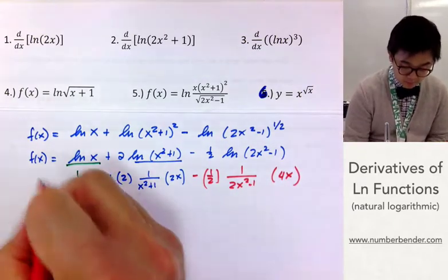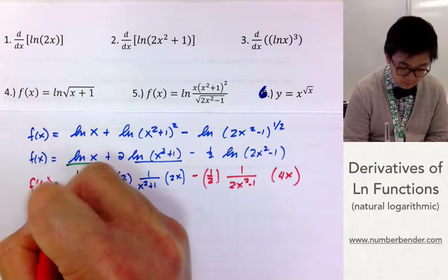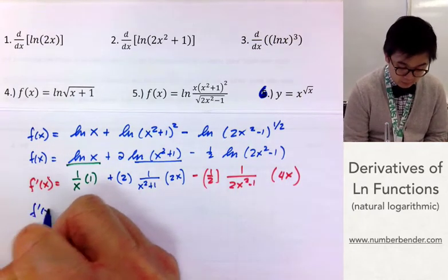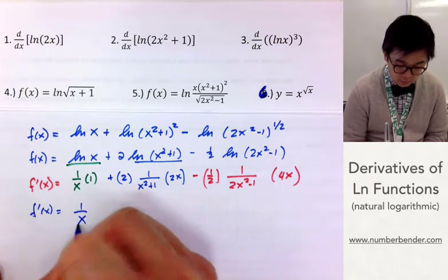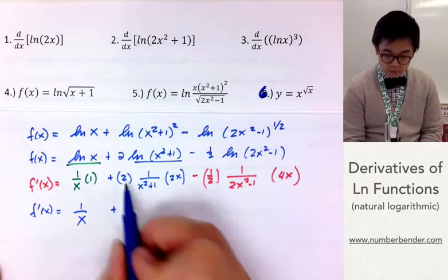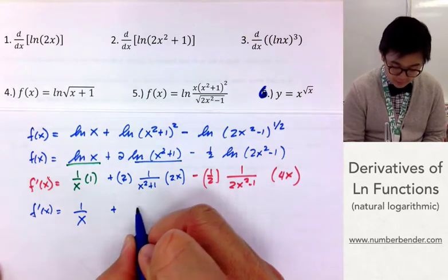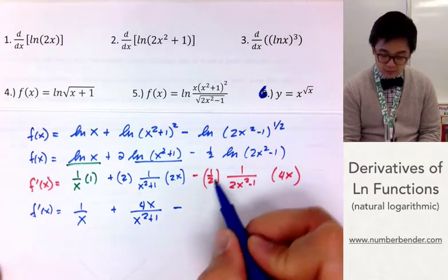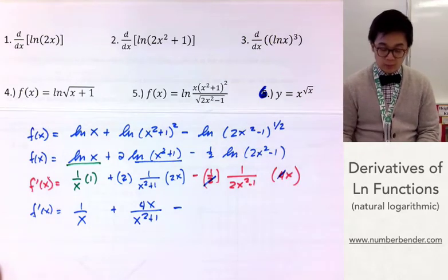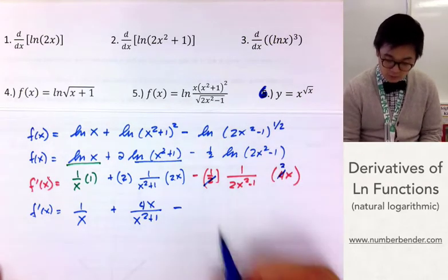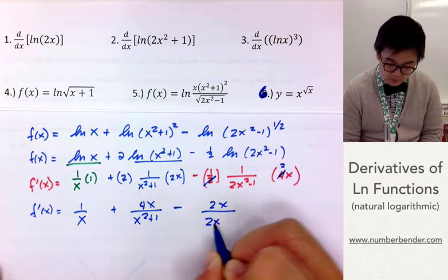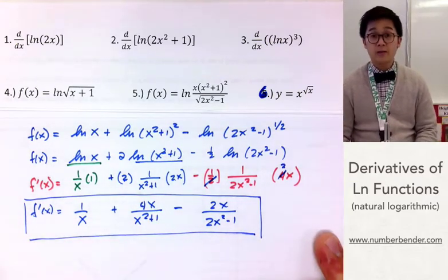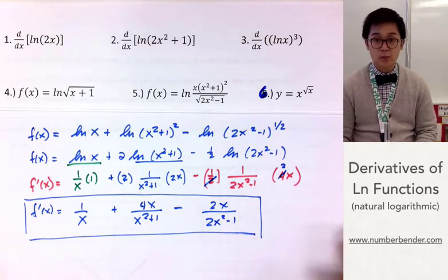Now we have f′(x). To simplify further, f′(x) equals 1 over x for the first term, plus 4x all over (x² + 1) for the second term. For the third term, multiplying 4 by 1/2 gives 2x, so we have minus 2x all over (2x² − 1). This is our derivative for problem number 5, found by expanding the function using the properties of logarithm.